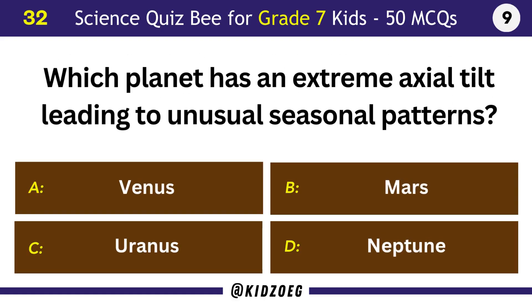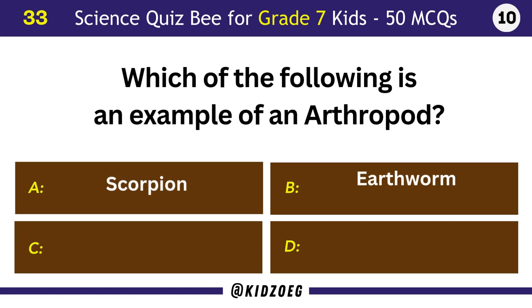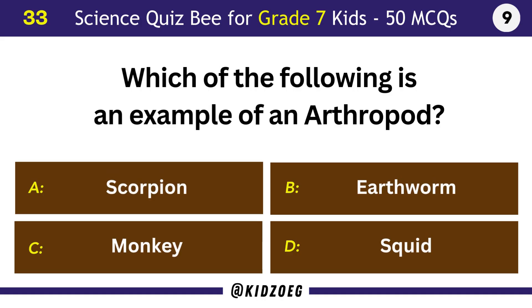Which planet has an extreme axial tilt leading to unusual seasonal patterns? Uranus. Which of the following is an example of an arthropod? Scorpion.